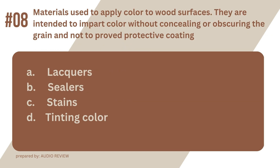Question 8. Materials used to apply color to wood surfaces. They are intended to impart color without concealing or obscuring the grain and not to provide protective coating. A. Lacquers. B. Sealers. C. Stains. D. Tinting color. The answer? It's C. Stains. Materials used to apply color to wood surfaces. They are intended to impart color without concealing or obscuring the grain and not to provide protective coating. Stains.